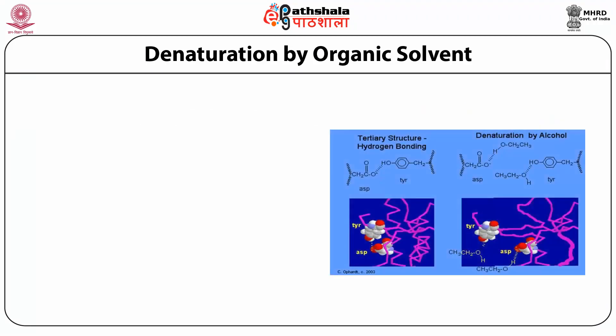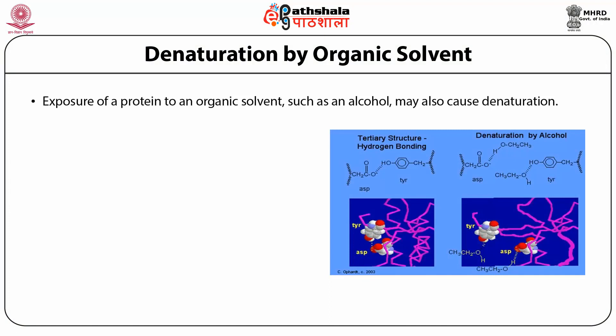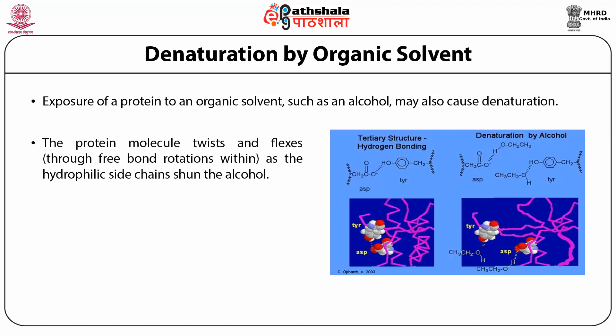We discuss denaturation of protein by organic solvent. Exposure of protein to an organic solvent such as alcohol may also cause denaturation. The protein molecule twists and flexes through free bond rotation as the hydrophobic side chain shuns the alcohol. In this process, hydrogen bonds and ionic interactions can be broken. The alcohol forms hydrogen bonds with the protein and thus breaks the intramolecular hydrogen bonds of the protein, causing denaturation.